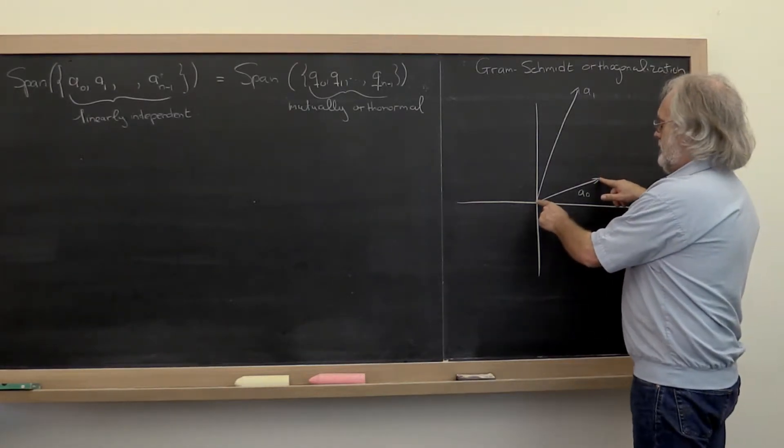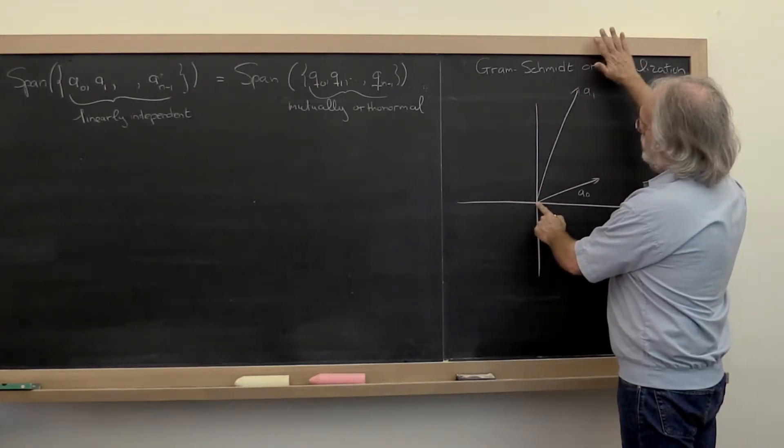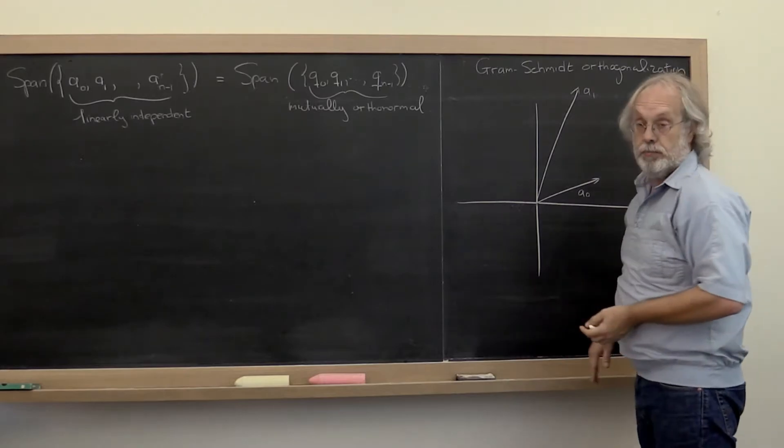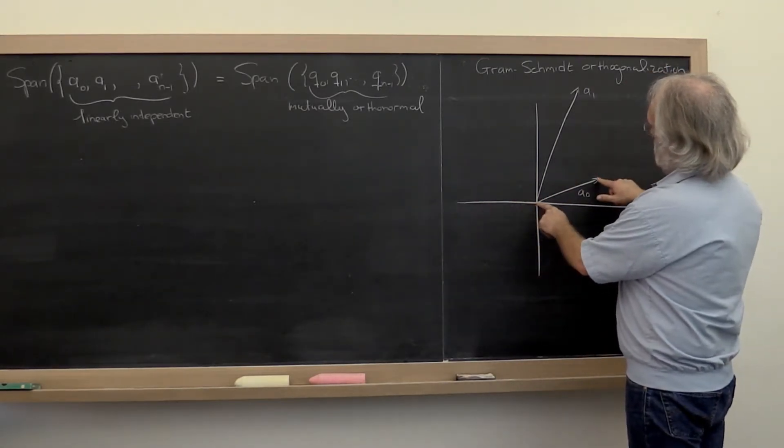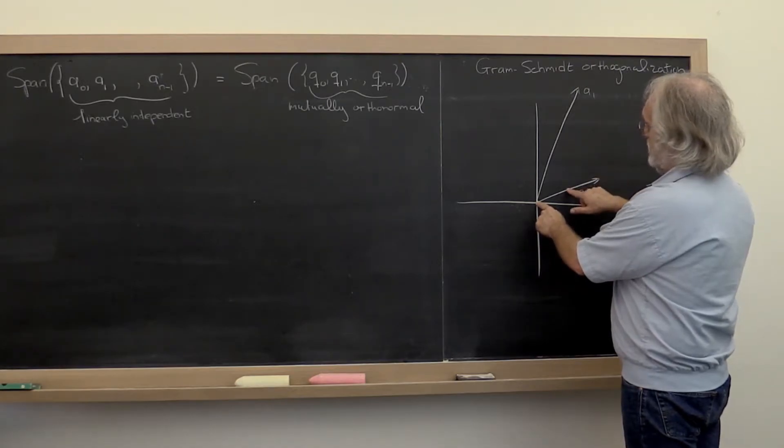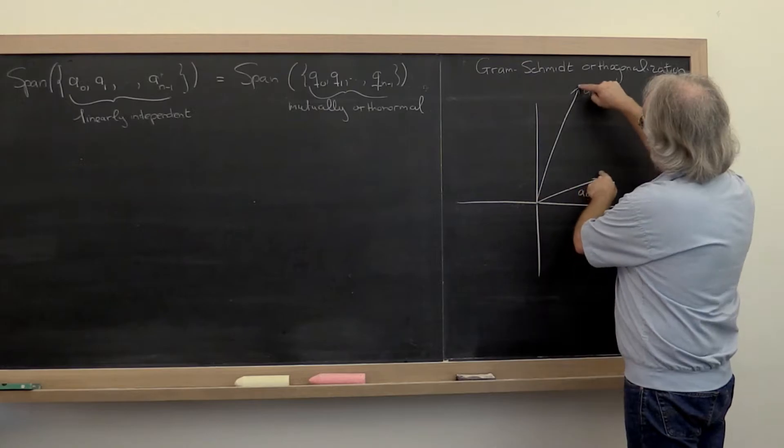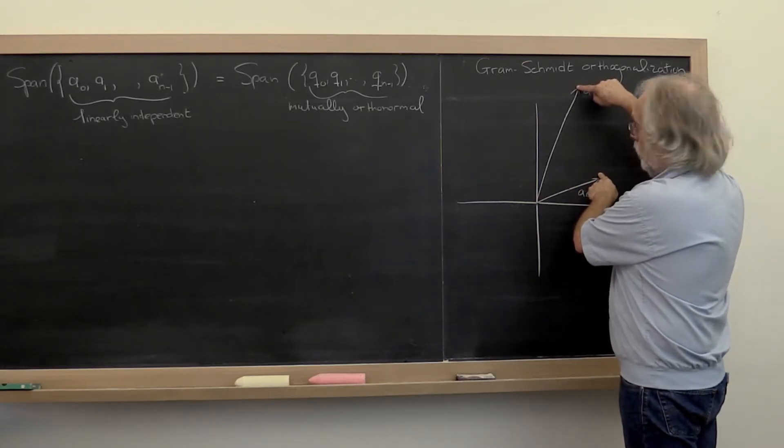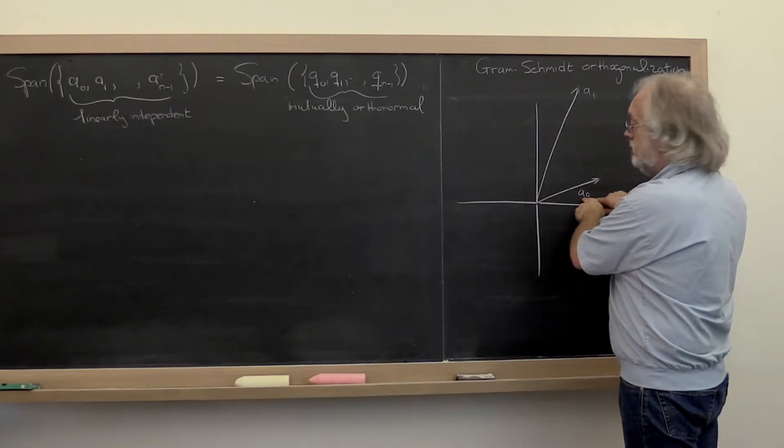We're given a vector a0 and another vector a1. Notice that the space spanned by these two vectors would also be spanned by another vector in the same direction as a0 and the component of a1 that is orthogonal to a0.